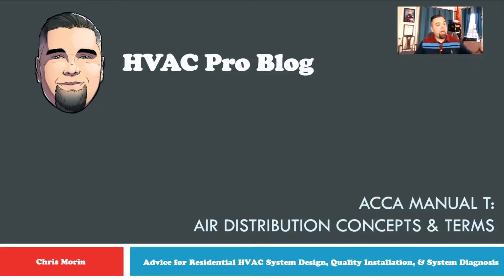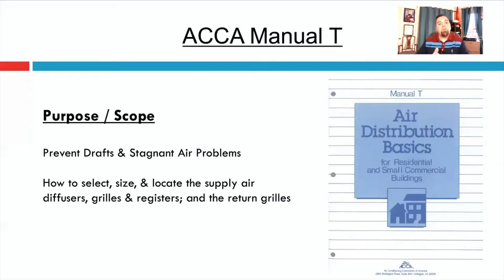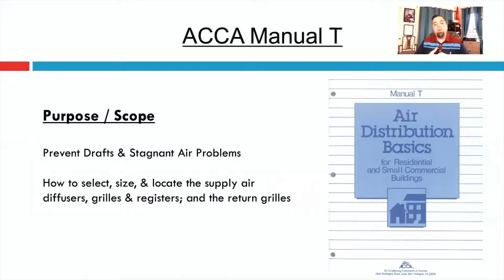A really great resource from ACCA that is very important in selecting terminal devices — Manual T. The purpose and scope of this manual is really to give you the basics so when you design your duct system you'll be able to prevent drafts and stagnant air problems that you may have if you don't select the right terminal devices. It's going to walk you through how to select, size, and locate supply air diffusers, grills, and registers, and also the return grills. Not to say you couldn't use diffusers on the return — you could, most people don't.